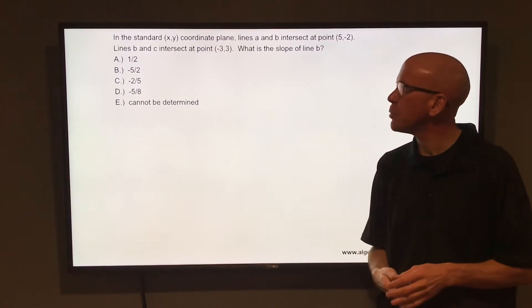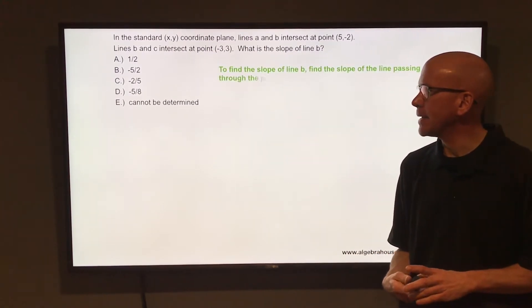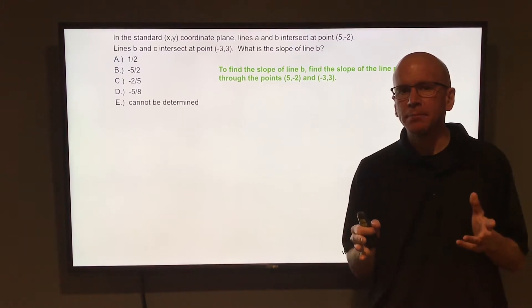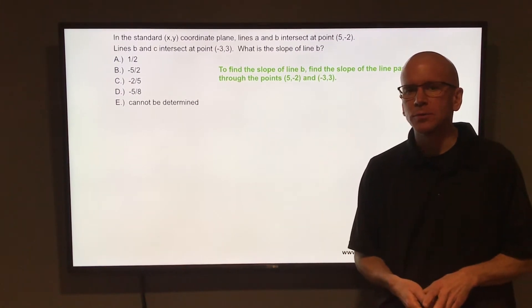Well, line B contains both of those points, (5, -2) and (-3, 3). So if you want to find the slope of line B, you're finding the slope of the line that goes through those two points.